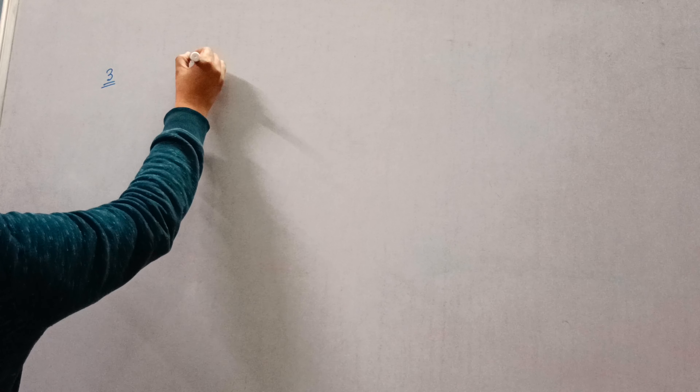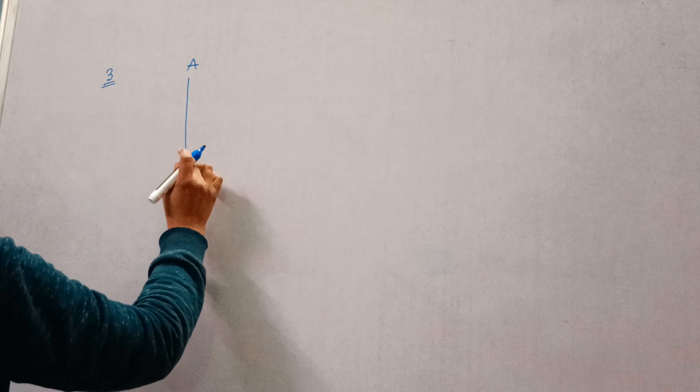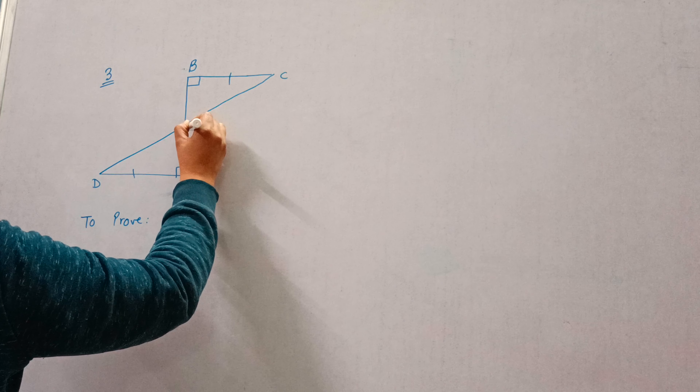Greetings everyone. Today we will be doing question number 3 of exercise 7.1. The question states that AD and BC are equal perpendiculars to a line segment AB — they are equal as well as perpendicular to AB.